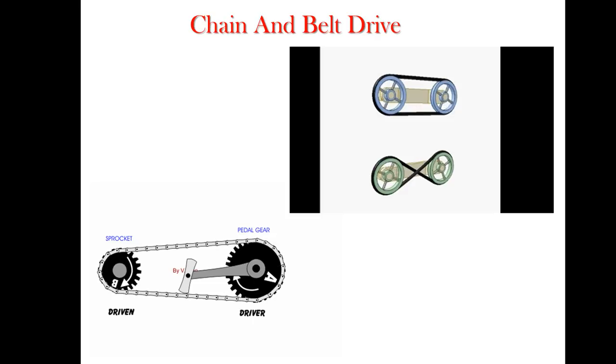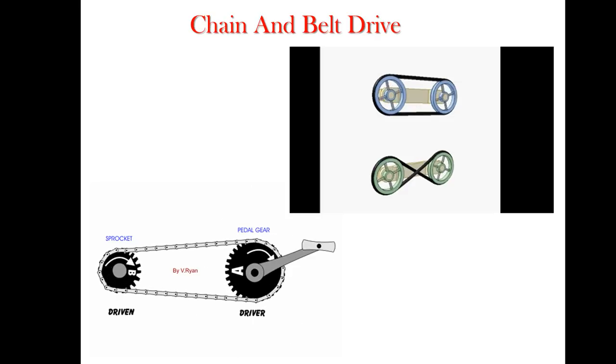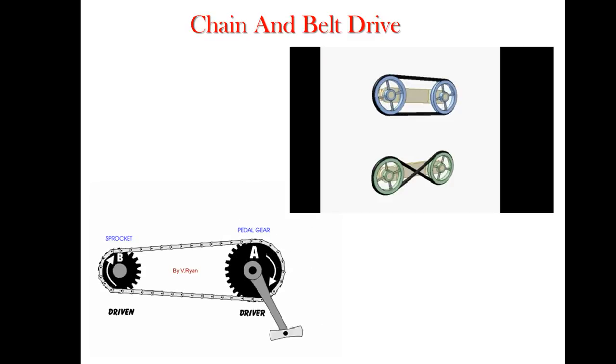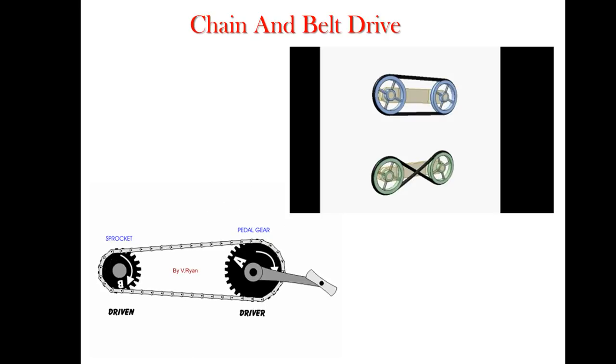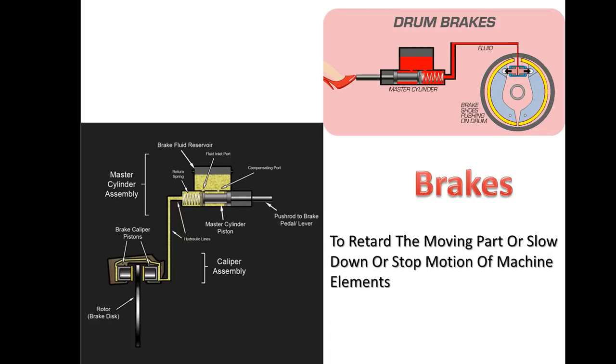Next part is chain and belt drives. This chain drive is very simple - bicycles and motorcycles use this for power transmission purpose, whereas the belt drives you might have seen in flour mills, maybe in automobiles or in some machine parts. The applications of belt drives in day-to-day life are enormous.